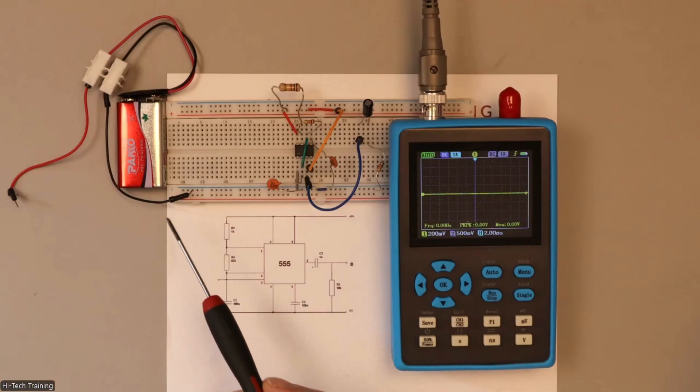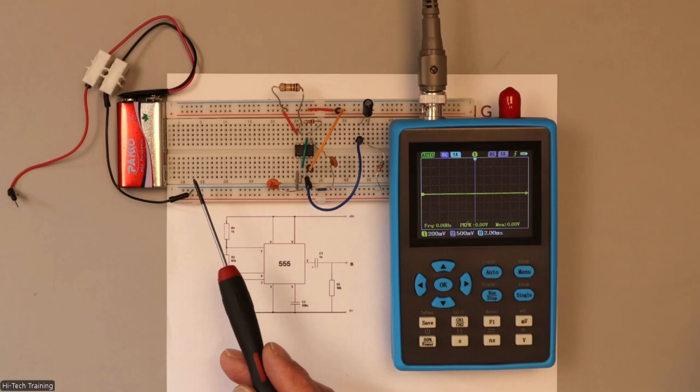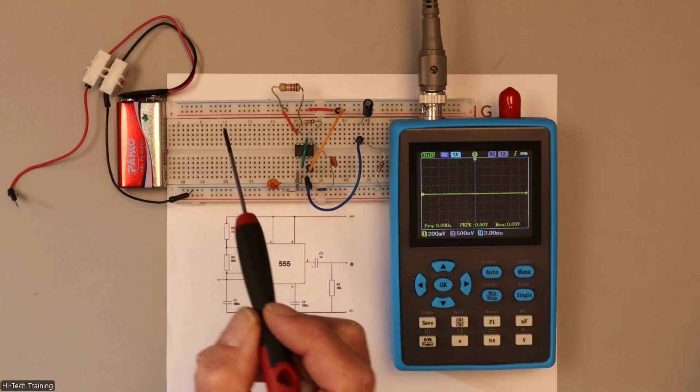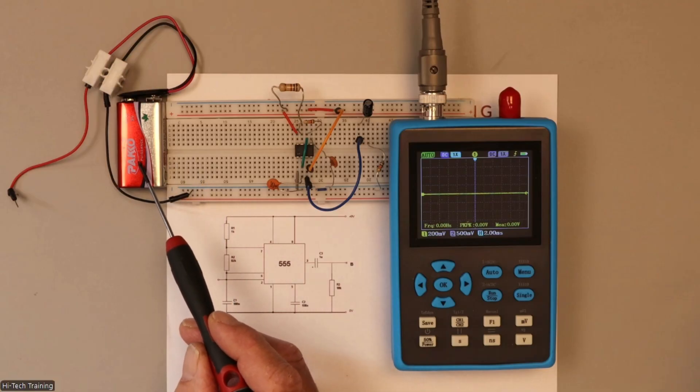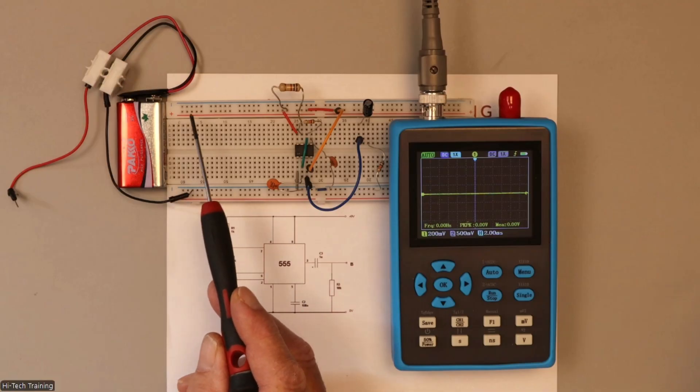This is a breadboard, a prototyping board. We use this to build circuits on and our trainees on our courses are provided with these to build up various circuits and test out how they work. Main thing here is we've got a 9 volt battery on the side. We're going to run our system from that.